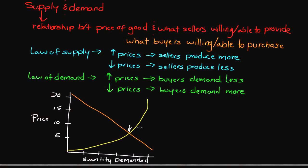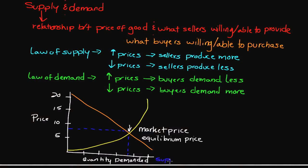This intersection is what we refer to as the market price, also called the equilibrium price — they essentially mean the same thing. It's the point at which supply and demand are equivalent. At this particular point, buyers would demand a certain quantity of goods and be willing to pay, say, $7 or $8. At the same time, from a selling standpoint, suppliers would also be willing to provide that quantity at that price. So both sides agree at this equilibrium point.